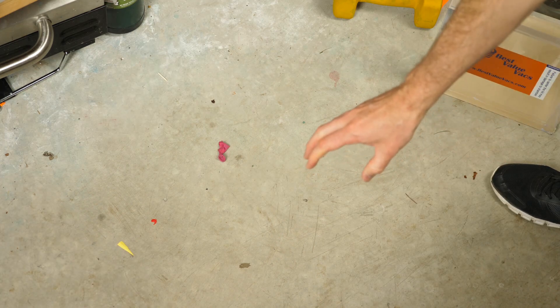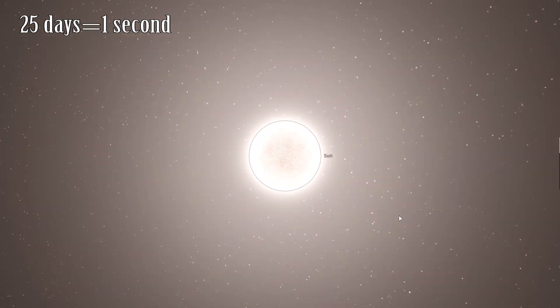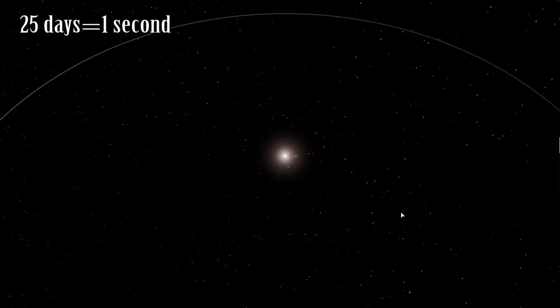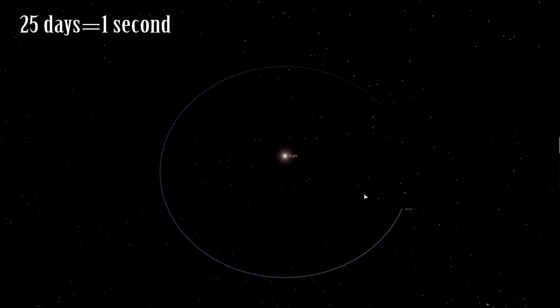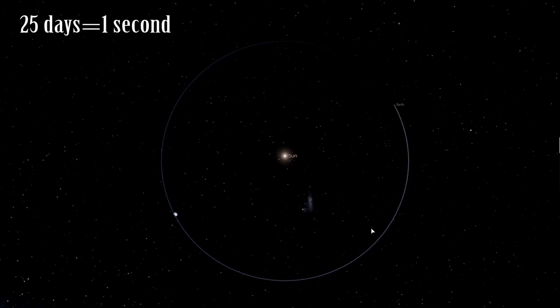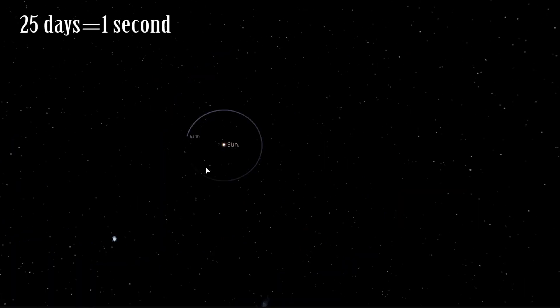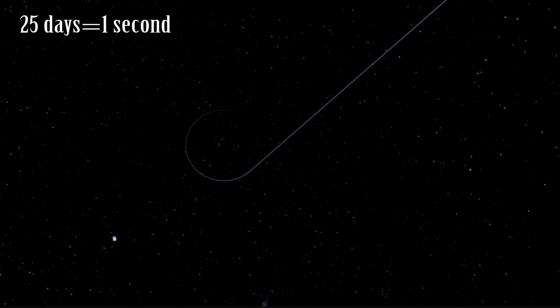So here's the real simulation of what would happen if the sun suddenly disappeared. And here's what would happen to the entire solar system.